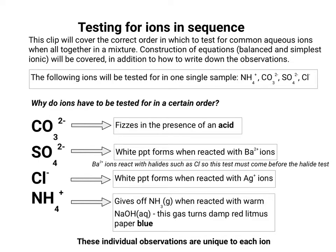Using Ba²⁺ ions in the sulfate test would also interfere with the halide test because Ba²⁺ ions react with chloride minus ions. So the sulfate test has to come before the halide test. Because both the sulfate test and the chloride test give white precipitates, you need to filter off the insoluble barium sulfate precipitate before going any further.